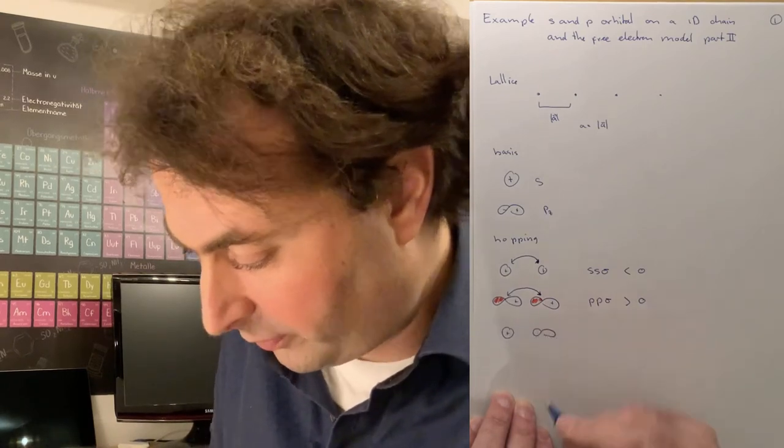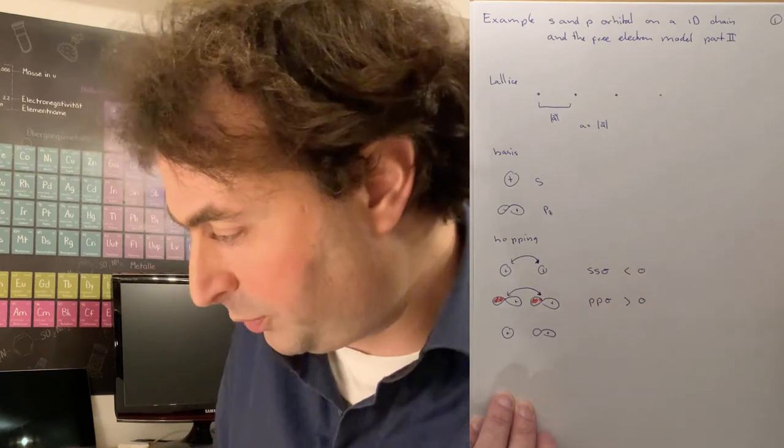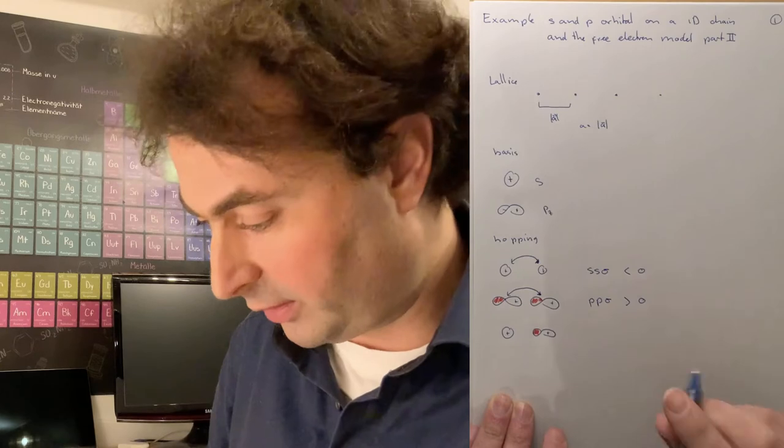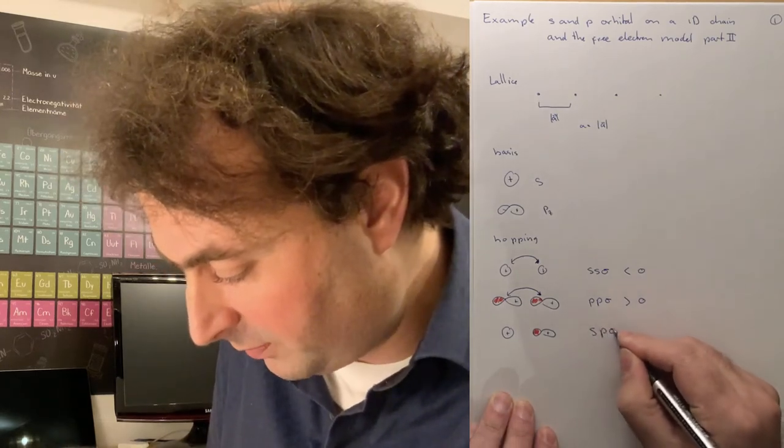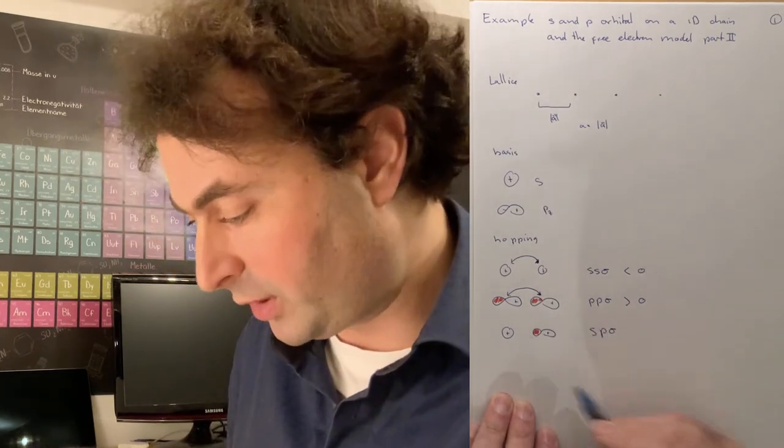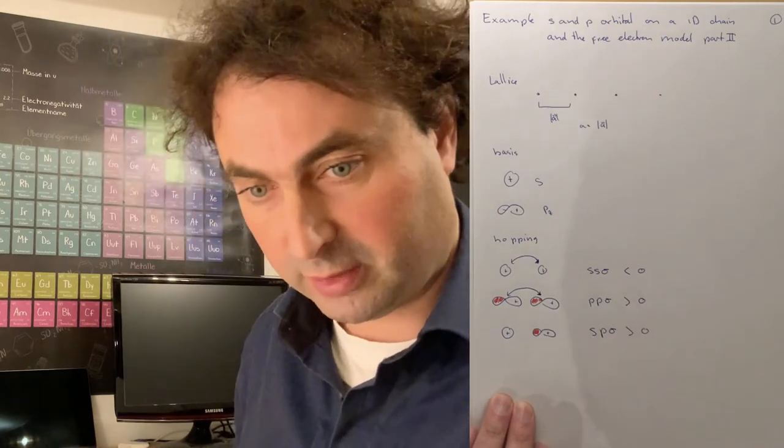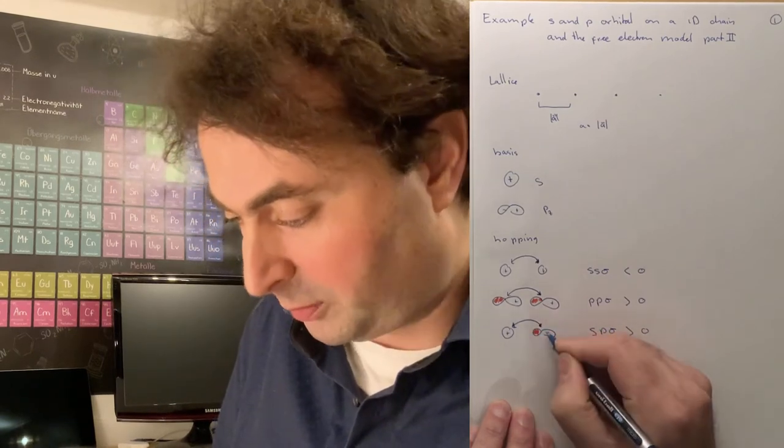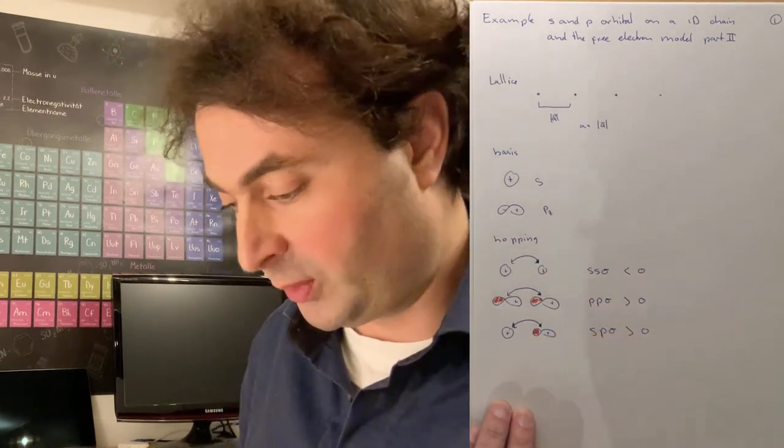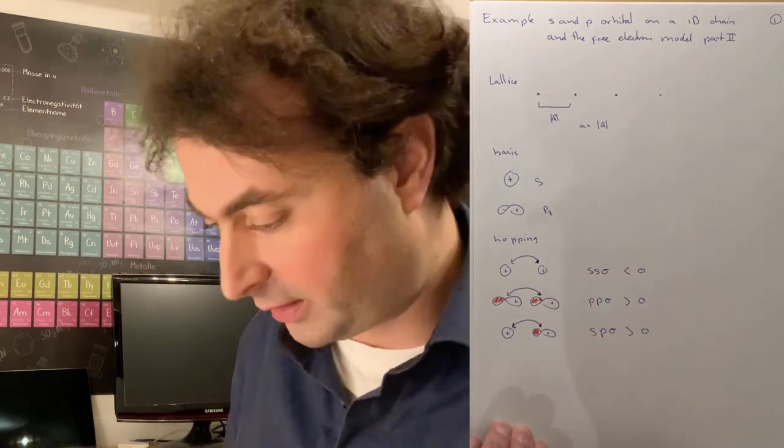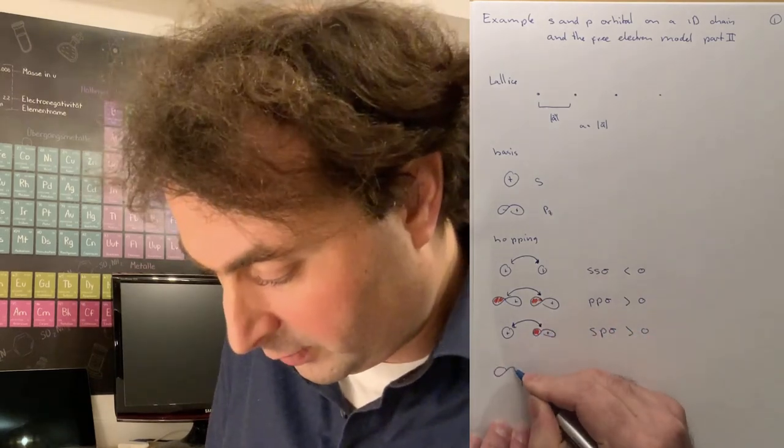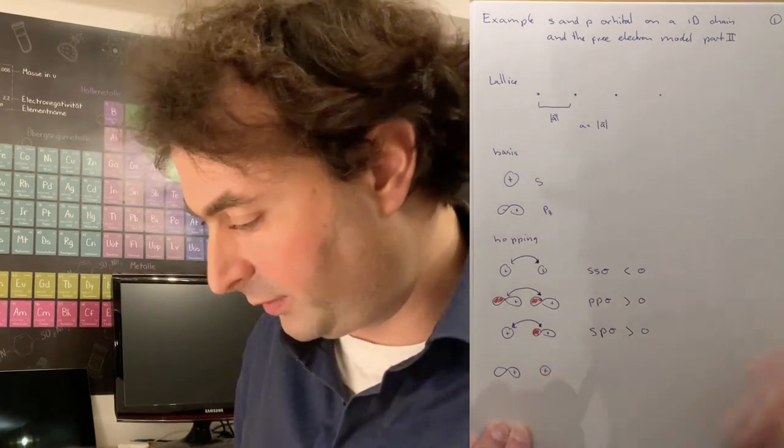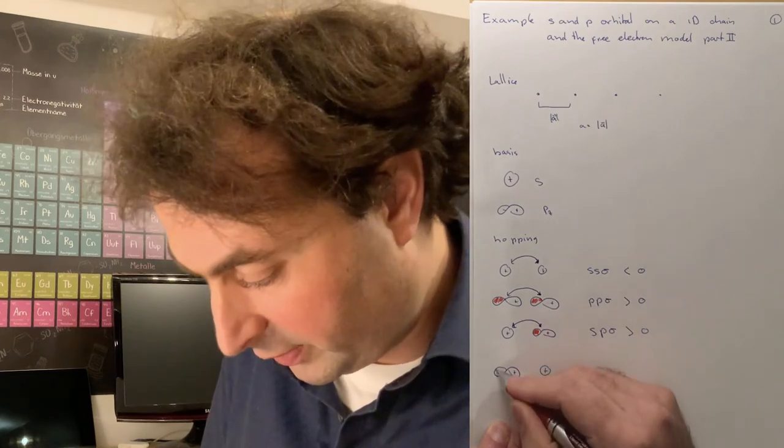Then we can hop from an s to a p orbital, giving rise to the matrix element sp sigma. It's a plus sign to a minus sign lobe, so a positive matrix element. We can either hop from the s to the p or from the p to the s. One is in the positive z direction, the other is in the negative z direction.